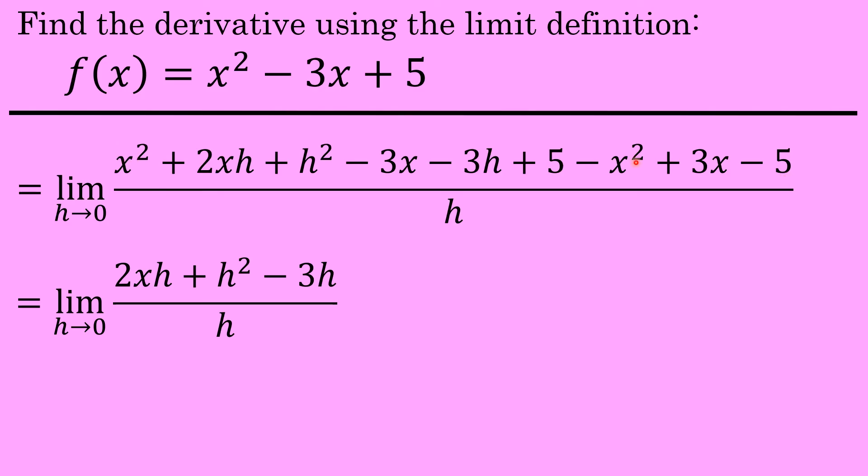The x squareds are eliminated, the 3x eliminated, the two terms of 5 and minus 5 are eliminated, leaving you with just the limit as h approaches zero of 2xh, the h squared, and the minus 3h term.